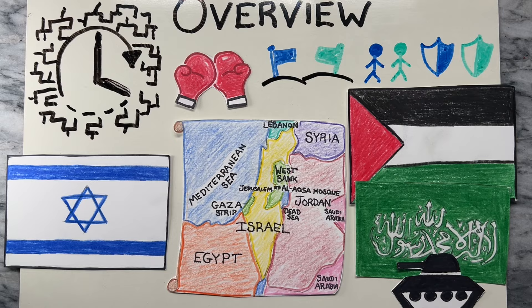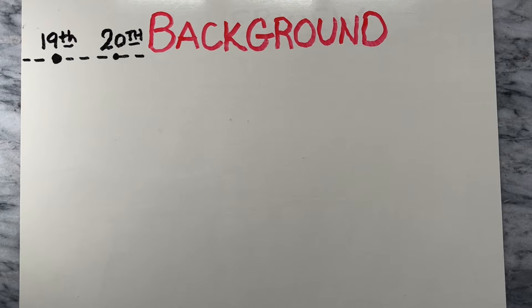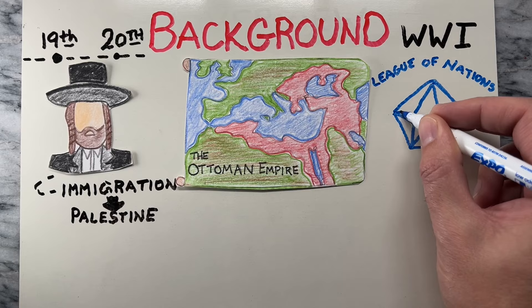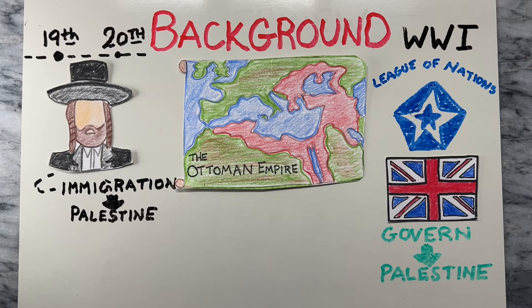The roots of the conflict can be traced back to the late 19th and early 20th centuries when Jewish immigration to Palestine, then part of the Ottoman Empire, began to increase. After World War I, the League of Nations granted Britain the mandate to govern Palestine. During this period, tensions between Jewish immigrants and Arab residents grew.